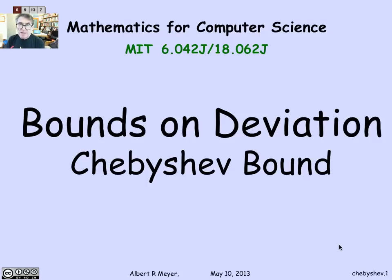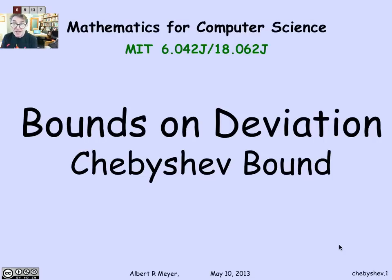It's interesting that the Markov bound, even though it's very weak and seems not very useful, the Chebyshev bound — which generally gives you a significantly stronger and valuably stronger bound on the probability that a random variable differs much from its mean — is actually a trivial corollary of Markov's theorem. It's a very simple, ingenious way to use Markov's bound to derive Chebyshev's bound. Let's look at how.